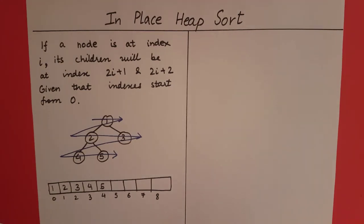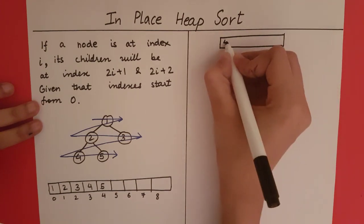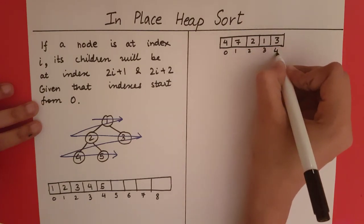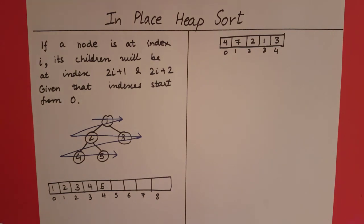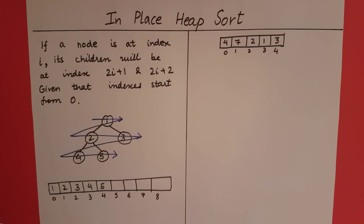Now let us look at in-place heap sort using this kind of implementation. We will use an example array that we need to sort using heap sort — using only this array, no other data structure. That is why it is called in-place. Recall that heap sort has two phases: the first phase is the construction of the heap, and the second phase is repeatedly deleting the root.